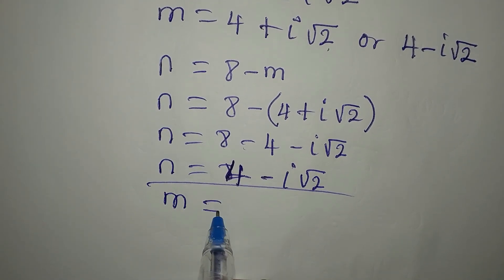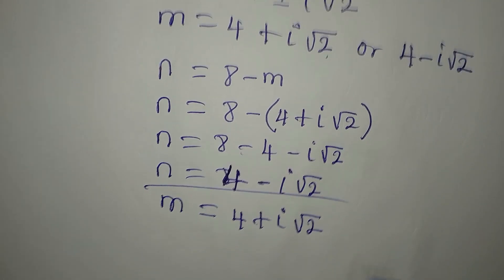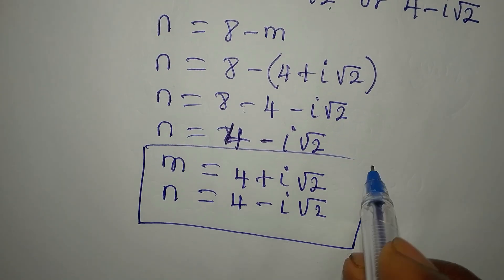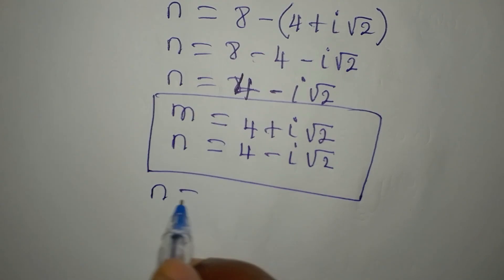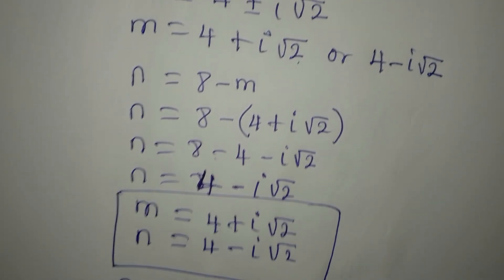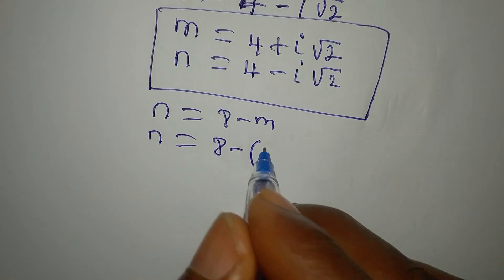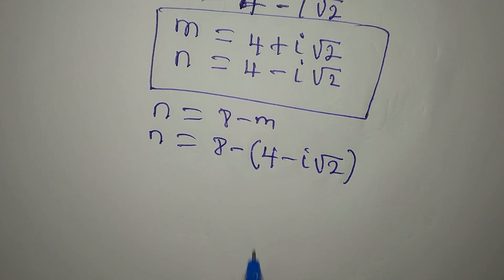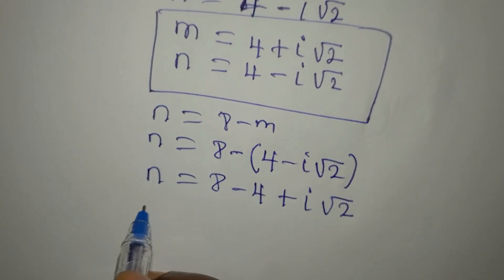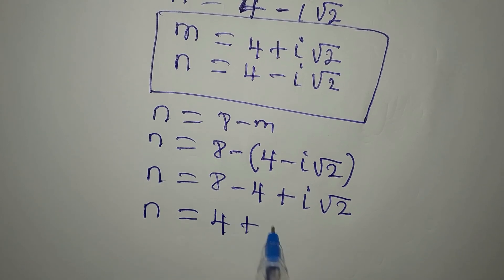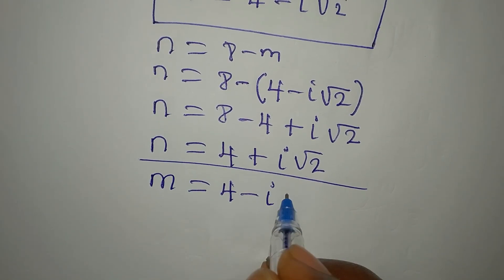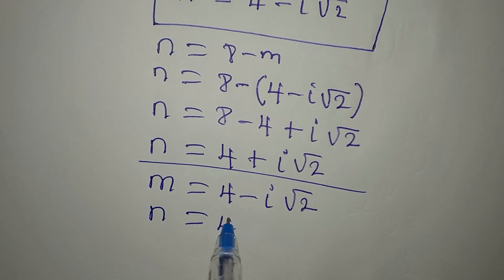So when m equals 4 plus i root 2, n equals 4 minus i root 2. Now for the second value: n equals 8 minus bracket 4 minus i root 2. Opening the bracket — negative times negative is positive — so n equals 8 minus 4 plus i root 2, giving n equals 4 plus i root 2. Therefore when m equals 4 minus i root 2, n equals 4 plus i root 2.